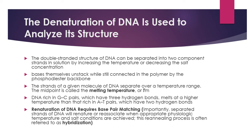Denaturation is temporary; in this process the phosphodiester backbone remains connected, but the hydrogen bonding between base pairs is temporarily removed. The temperature at which DNA mainly separates is called the melting temperature. Melting temperature is high when the G and C content of the DNA is high, because G-C base pairs contain triple hydrogen bonds while A-T base pairs contain only double hydrogen bonds, making G-C bonds more difficult to break.